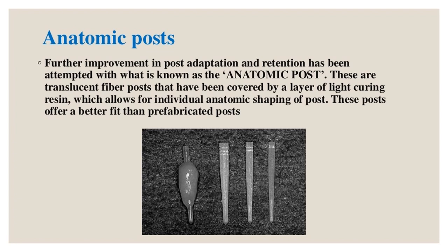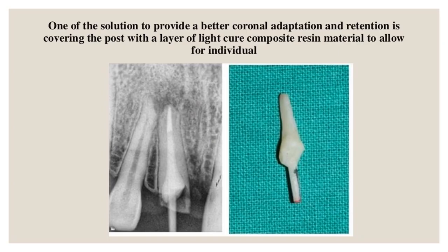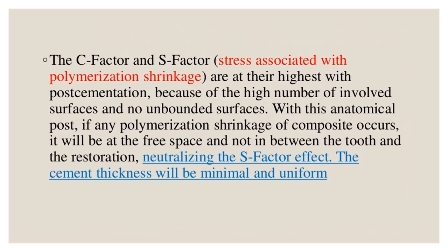Anatomic posts: translucent fiber posts covered by a layer of light-curing resin which allows for individual anatomic shaping, offering a better fit than prefabricated posts. Covering the post with light-cure composite resin provides better coronal adaptation and retention. The C-factor (ratio of bonded to unbonded/free surfaces) and S-factor stresses associated with polymerization shrinkage are highest with post cementation due to the high number of involved surfaces. With this anatomical post, any polymerization shrinkage occurs at the free space rather than between tooth and restoration, neutralizing the S-factor effect, and cement thickness remains minimal and uniform.